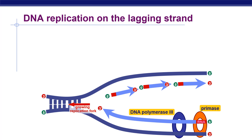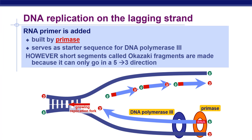DNA polymerase I removes the primer from the 5 prime end of a fragment, replacing it with DNA nucleotides added one by one to the 3 prime end of the adjacent fragment. The replacement of the last RNA nucleotide with DNA leaves the sugar-phosphate backbone with a 3 prime end. The RNA primer built by primase serves as a starter sequence for DNA polymerase III; however, short segments called Okazaki fragments are made because synthesis can only proceed in the 5 prime to 3 prime direction.